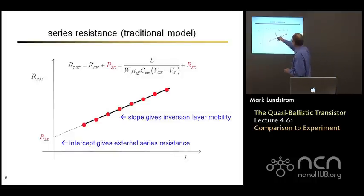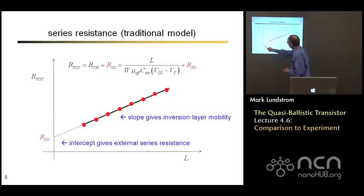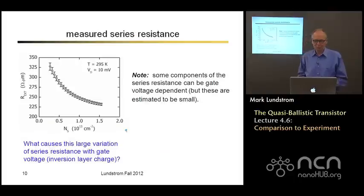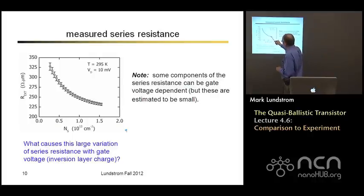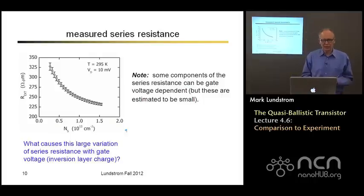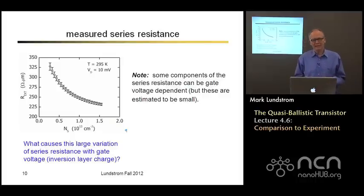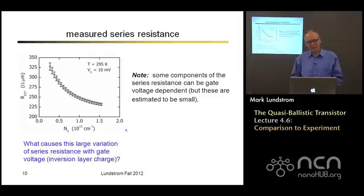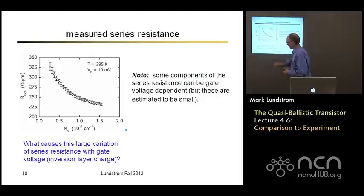Here are the results when you actually do that. What you find is that the series resistance you extract depends on the inversion layer density or the gate voltage. So what appears to be going on is a series resistance that is somehow gate-voltage dependent. At first blush you'd say the channel resistance should depend on gate voltage, but since channel resistance is proportional to channel length and we've extrapolated to L equals zero, we've removed that—so we should just get the external series resistance. That is part of what we're getting, but it's gate-voltage dependent. Let's talk about why.